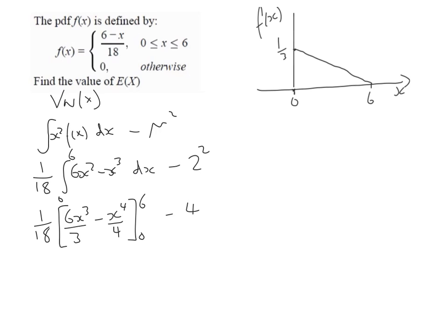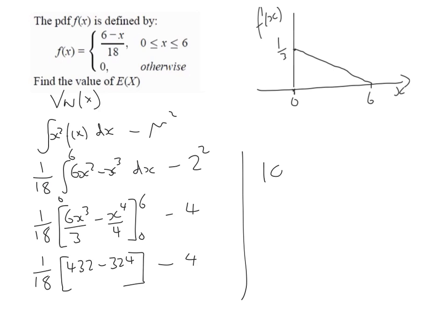Substituting in 6, we get 1/18 times (432 minus 324). When we substitute in 0 we get nothing. We must remember to subtract the mean squared, so we take away 4. That gives us 108 divided by 18, minus 4, which is 6 minus 4, which equals 2. So the variance of X is also 2.